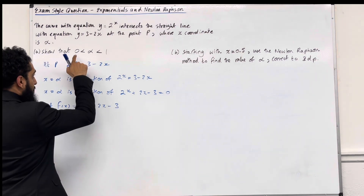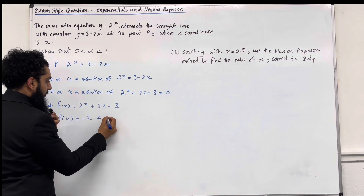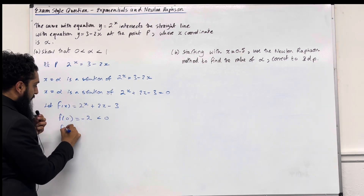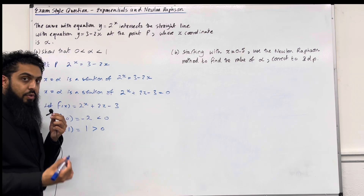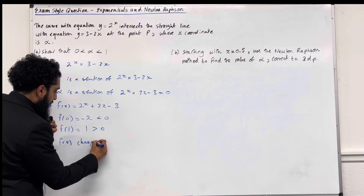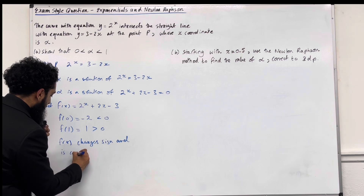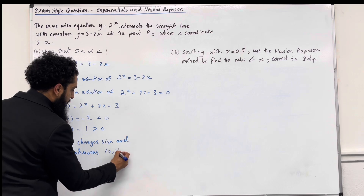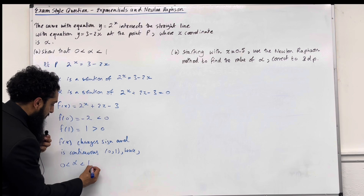I'm going to substitute x equal 0 into the function. F of 0 is minus 2, which is less than 0. Now substituting x equal 1: F of 1 is equal to 1, which is more than 0. F of x changes sign and is continuous in the open interval 0 to 1. Hence, alpha has to be between 0 and 1.